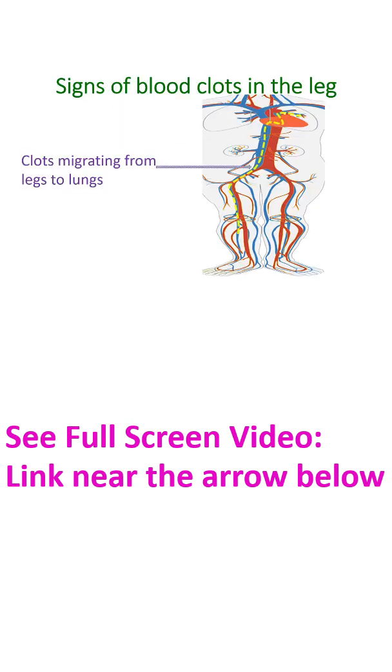Clots in the veins obstruct return of blood from the legs to the heart and lungs. The legs will become swollen and painful with a bluish red color. Clots in the veins can migrate to the lungs and produce pulmonary embolism.